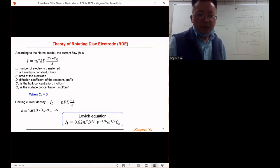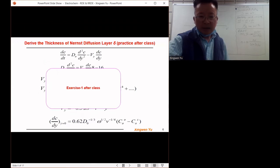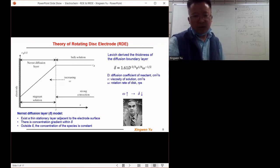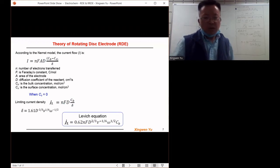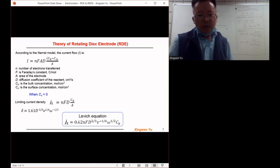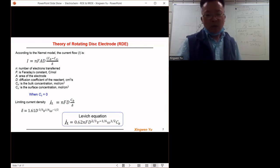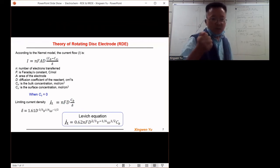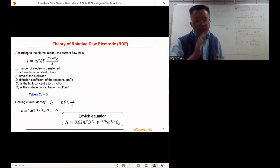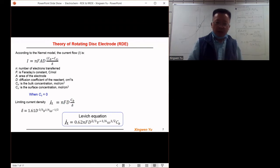Delta is just the Nernst diffusion layer, the thickness of the Nernst diffusion layer, as we discussed just now. It has already been developed by Levich. Integration of delta into the limiting current equation, we get the Levich equation: j_L = 0.62nFD^(2/3)ν^(-1/6)ω^(1/2)C_B. The Levich equation is important as the central equation for the theory of rotating disk electrode. We need to memorize this equation and should be able to write it down immediately whenever we talk about RDE or the Levich equation.